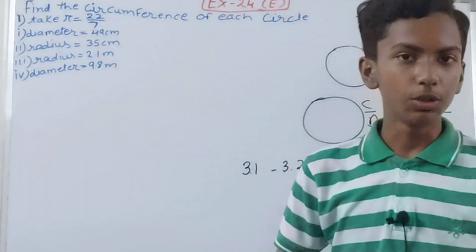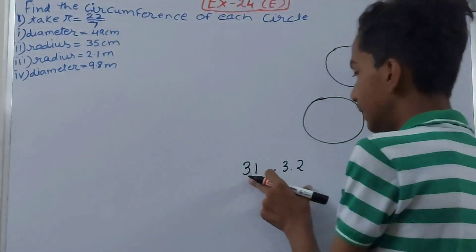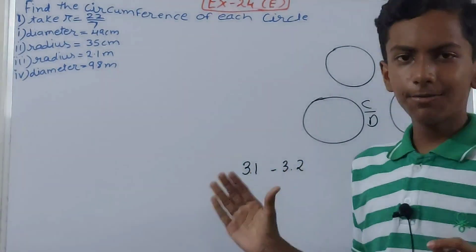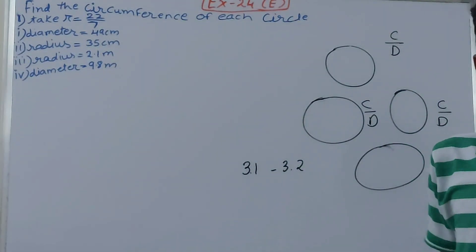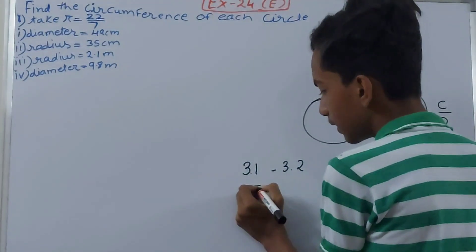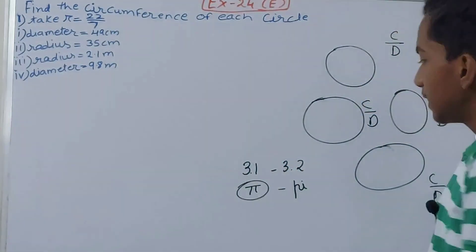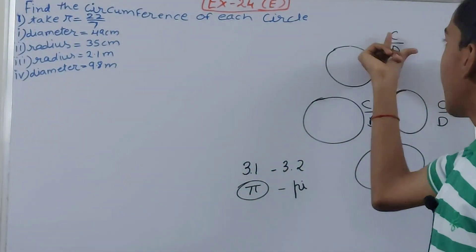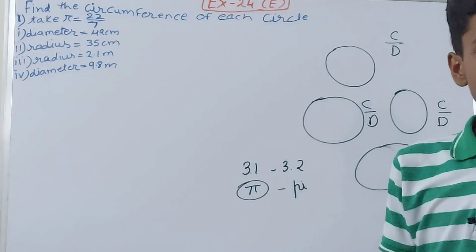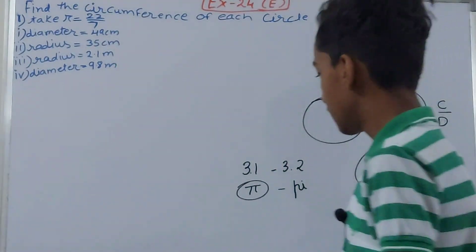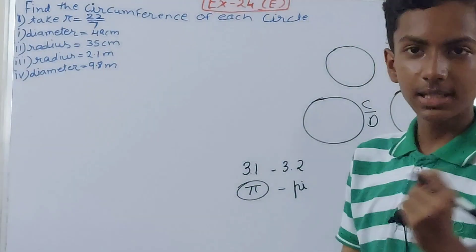This ratio is almost the same value for all circles, and we have given it a name — the Greek letter pi (π). Pi represents the value of C upon d, which is circumference upon diameter. Generally, pi is 22/7. You can convert that into decimals if you wish.